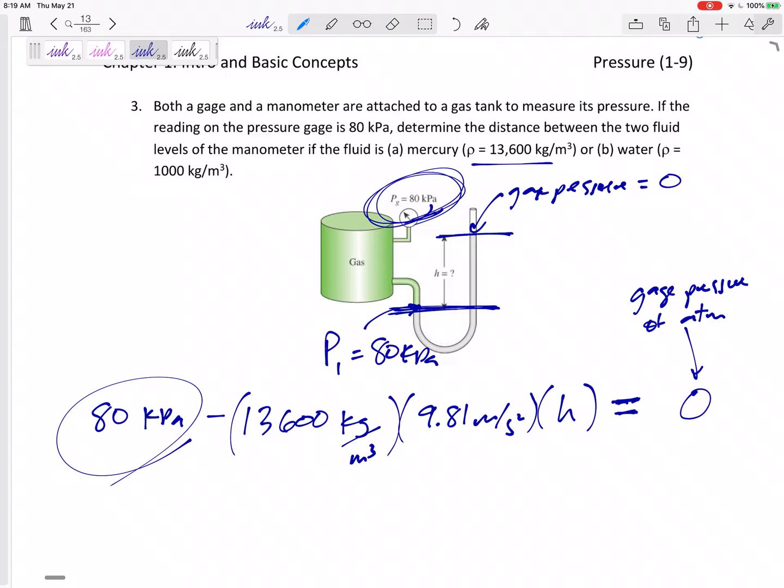If you were to take an atmosphere, take a reading, it'd be zero because there's no pressure change. If you took a pressure gauge and tried to read the atmospheric pressure, it would tell us zero. So here, we can just solve for h.